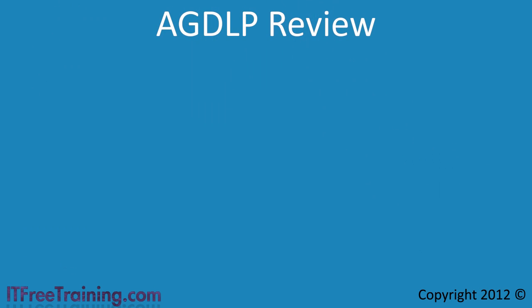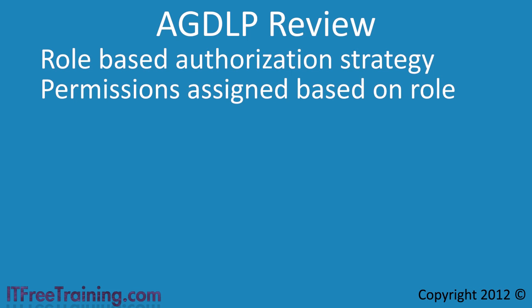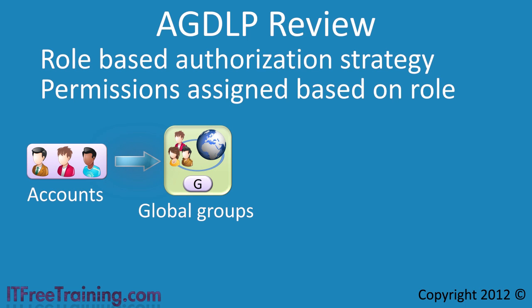Let's review what was covered in this video. AGDLP is a group strategy that can be used in your organization to simplify group administration. It is a role based authorization strategy so permissions are assigned to users based on their role in the organization. Using role based authorization makes it simple to change permissions when a user requires different permissions. Using AGDLP, accounts are placed into global groups. Global groups allow membership only from users and computers in that domain and other global groups in that domain. This means you can say with confidence that only users from your domain are in that group.